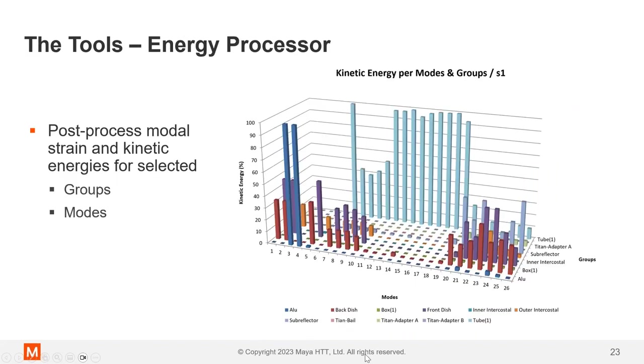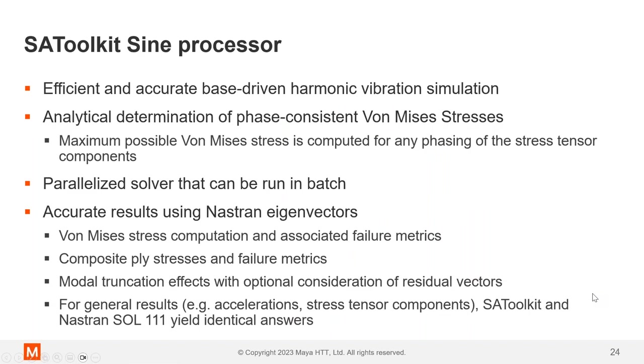The energy processor I like, you can have groups in the model. So these are groups I created of different materials or different parts and components of a spacecraft. And you can see for all the modes, which modes are where you're seeing kinetic energy for which modes and in which groups. This really helps you investigate your model and pinpoint areas of interest as you're working on your design analysis.